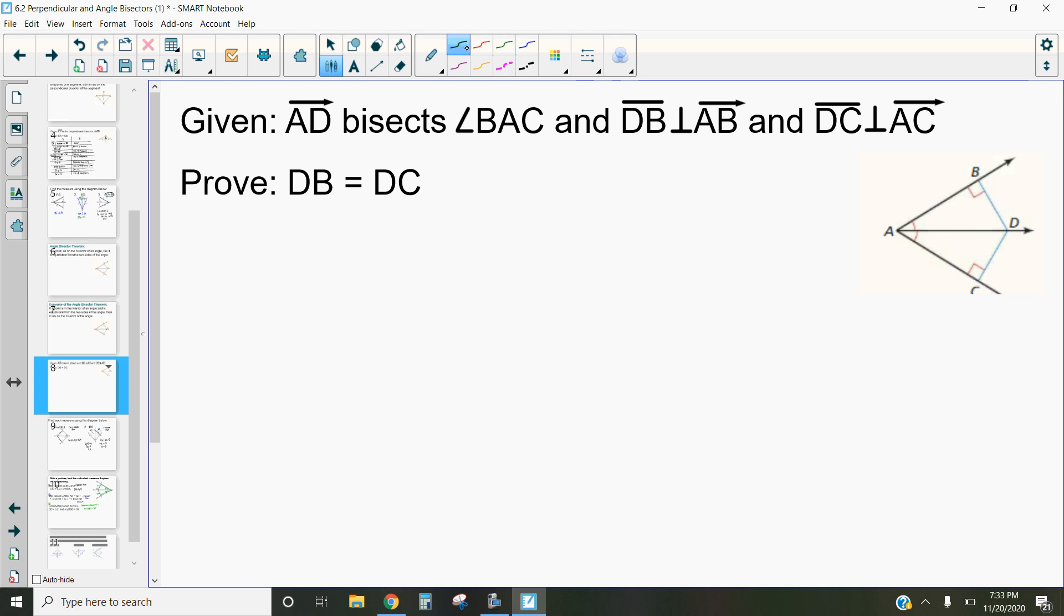So again we are going to use a two-column proof here just like we have been using when we do all of our other proofs. So on this side we have our statement and on this side we have our reasons. Now again every time we do a two-column proof we're always going to start with what we're given.